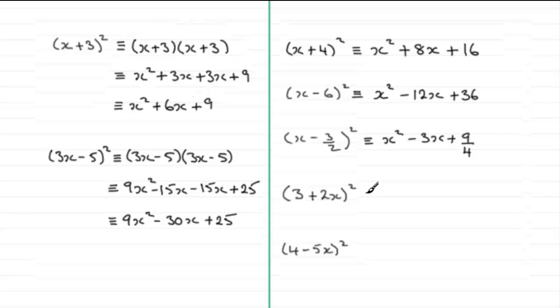Now with 3 plus 2x all squared, well again, square the first term, 3 times 3 is 9. The product, 3 times 2x, well that's going to be 6x. We double that and that's going to be 12x. And then we add to this the square of 2x, which is going to be 4x squared.